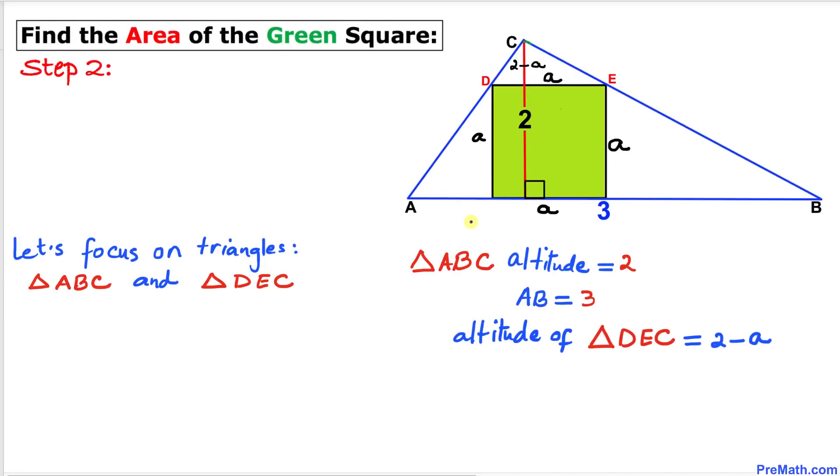Here's our next step. Let's focus on these two triangles: the first one is the bigger triangle ABC and the other triangle is this smaller one DEC.